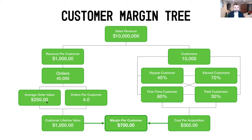Those customers at $250 times four orders would yield a customer lifetime value of $1,000 — the same as the revenue per customer figure. That can appear repeated on purpose: the $10 million could represent the lifetime of the business or a single year, and revenue per customer in that period could be the same or slightly different as customers generate more or less value over time.